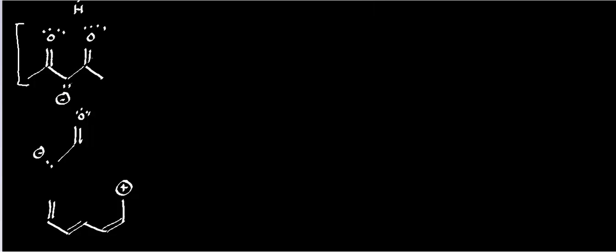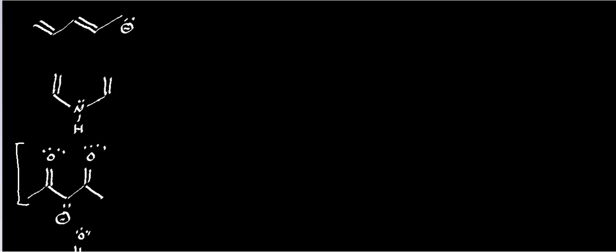Remember the rules that we had — I'll go ahead and put them up here so you can see. The rules for determining whether something has resonance, or what component of a molecule has resonance, is we apply this series: double, single, double, single, double, single, double, and so on.